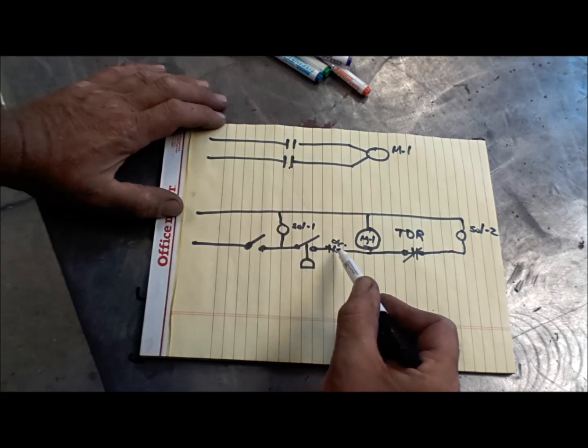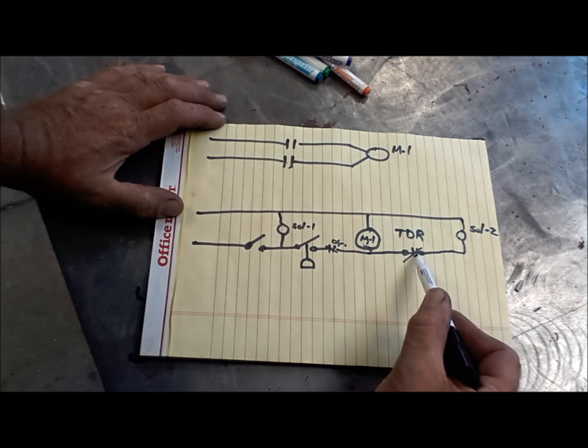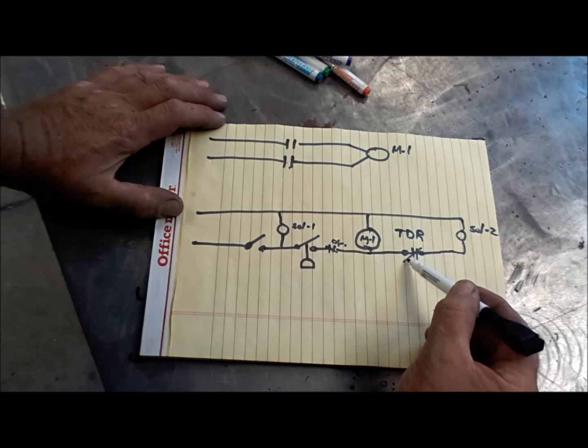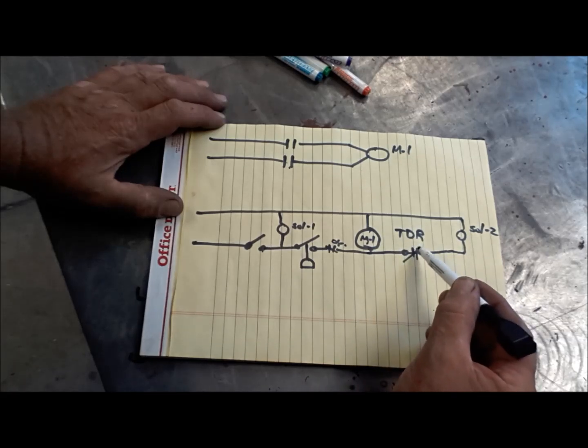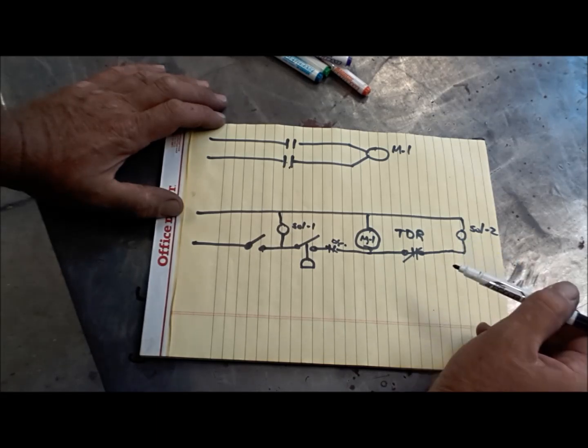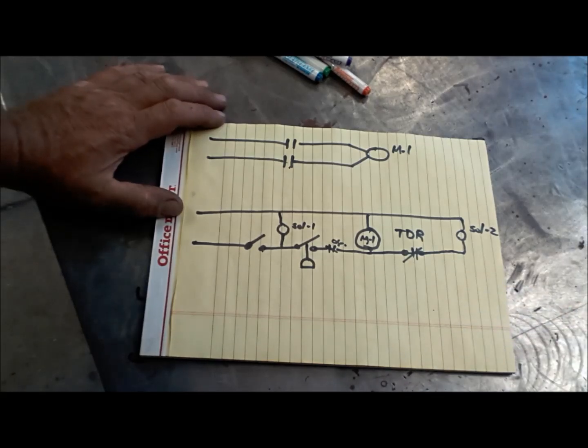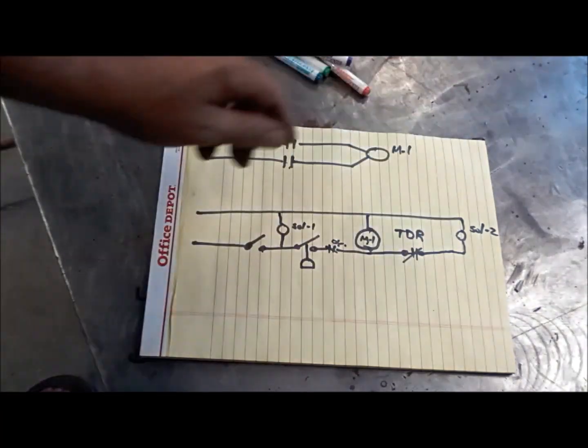But as soon as this M1 coil is energized, TDR is powered up now, time delay relay. It's going to start a timer. This thing's going to stay closed until the timer runs out. And then that switch is going to open. So this drain solenoid is going to only run for one, two seconds. So it's going to give you a quick burst. Every time the compressor cycles, you'll get a very small amount of drainage on the tank. So that's the way it works with a motor starter.